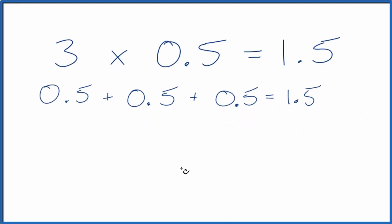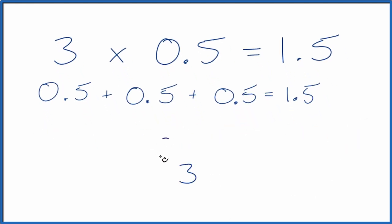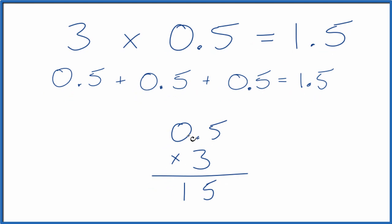Finally, you could just multiply 3 times 0.5. 3 times 5, that's 15. And 3 times 0, that's not anything. We have one decimal place here, so let's just put one decimal place here, and we end up with 1.5. So in answer to our question, 3 times 0.5 is 1.5.